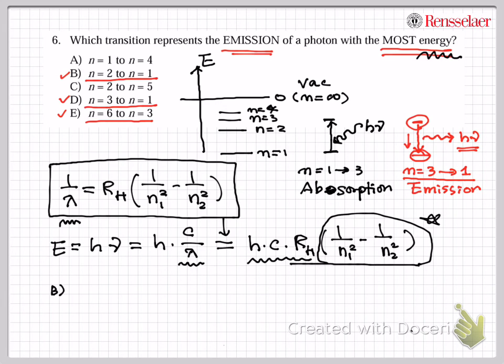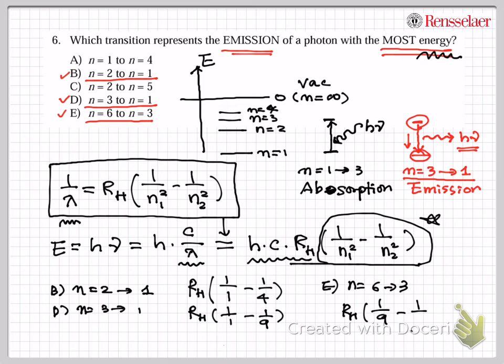So what matters the most is this value here. So for the case of B, which is n equals 2 to 1, you are talking about RH times 1 over 1 minus 1 over 4. And the case for D, which is n is 3 to 1, then we are talking about RH times 1 over 1 to 1 over 9. And the case for E, which is n equals 6 to 3, that's RH times 1 over 9 minus 1 over 36.